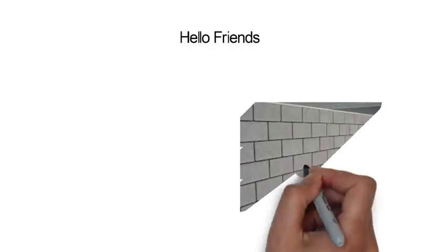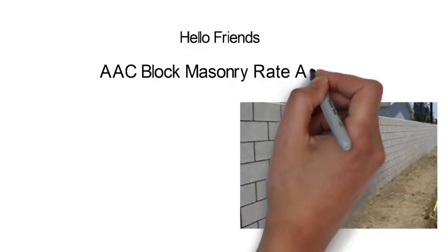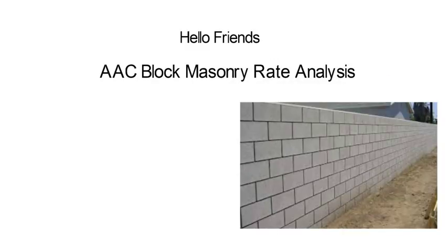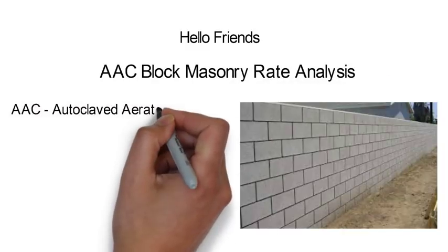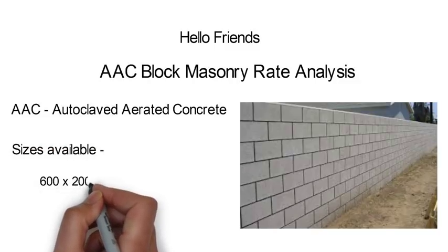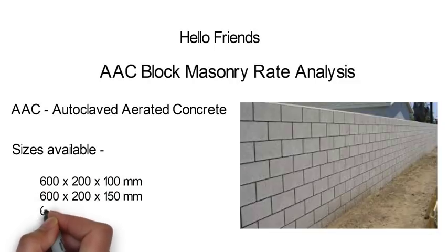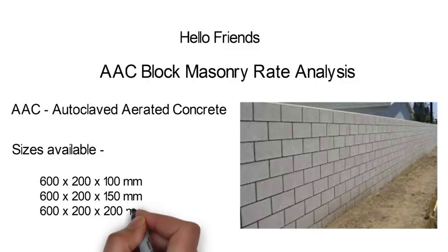Hello friends, in this video I am going to show you how to calculate the rate of AAC block masonry. So let's begin. AAC means autoclave aerated concrete. The general block sizes available in the market are 600x200x100mm, 600x200x150mm, and 600x200x200mm. Nowadays these AAC blocks have replaced bricks in the construction industry due to their numerous benefits.